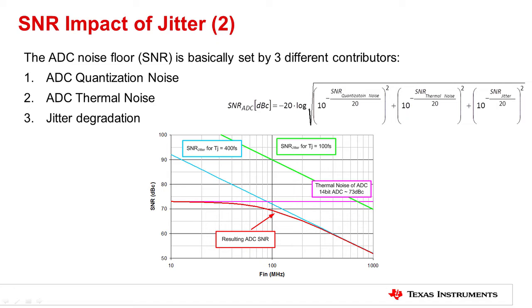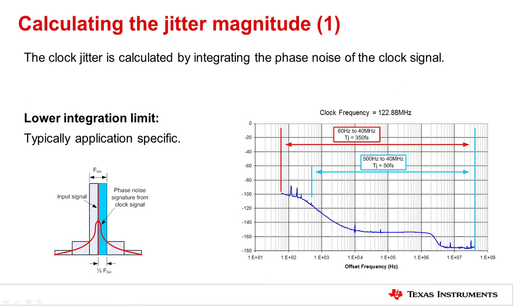For modern RF sampling converters, clock jitter degradation is a very big care about. The jitter of the external clock signal can be calculated by integrating its phase noise. For that calculation, one has to set the upper and the low integration limits. The low integration limit is typically set by the application.